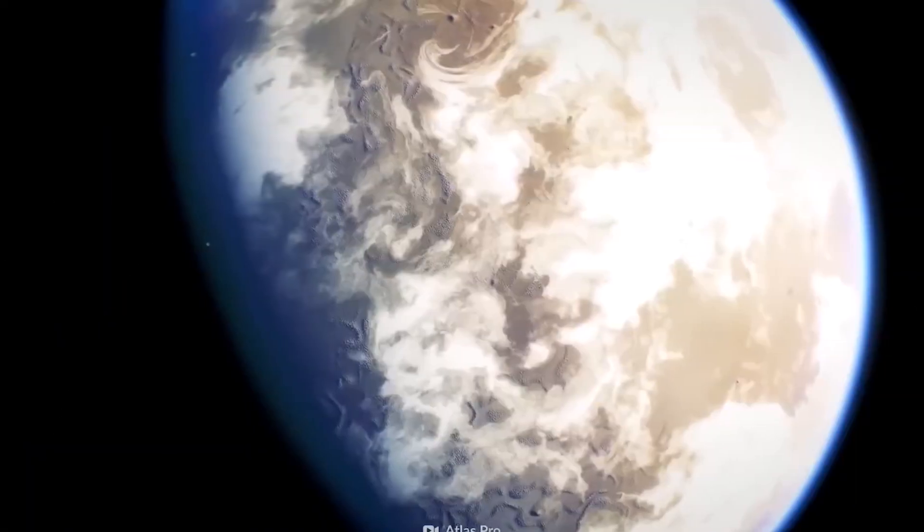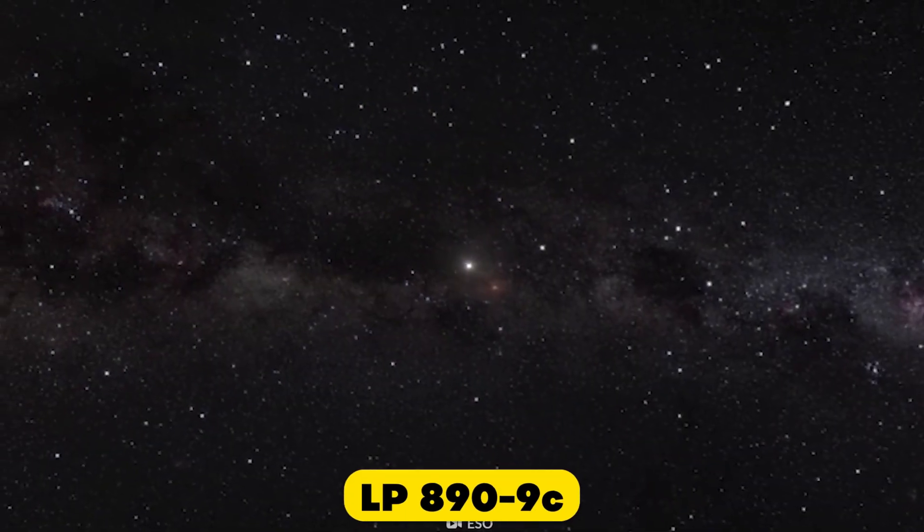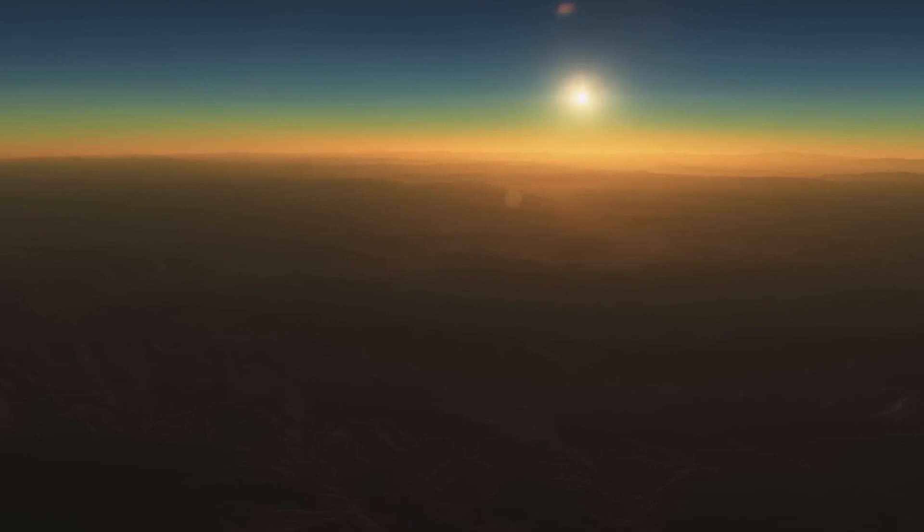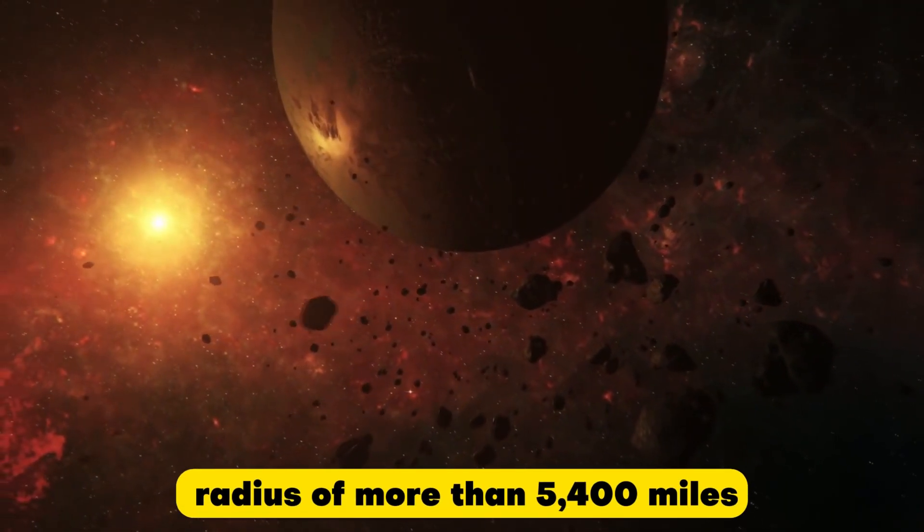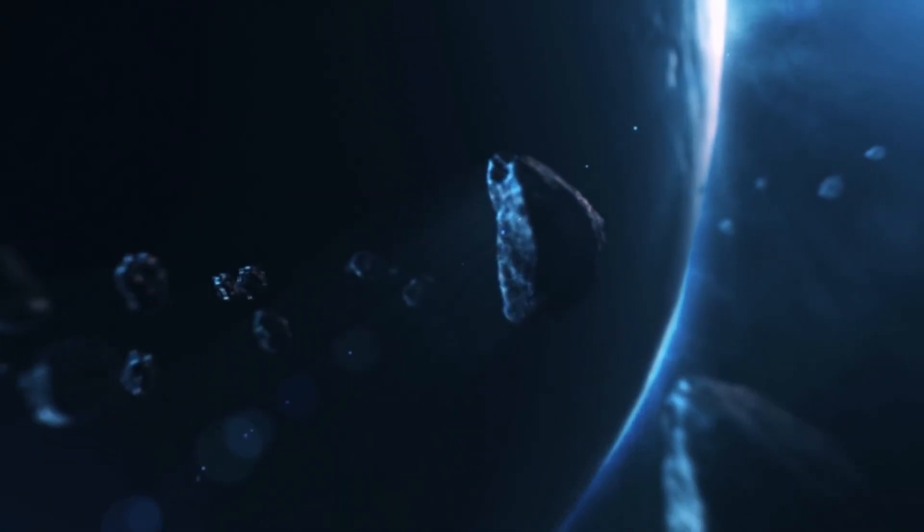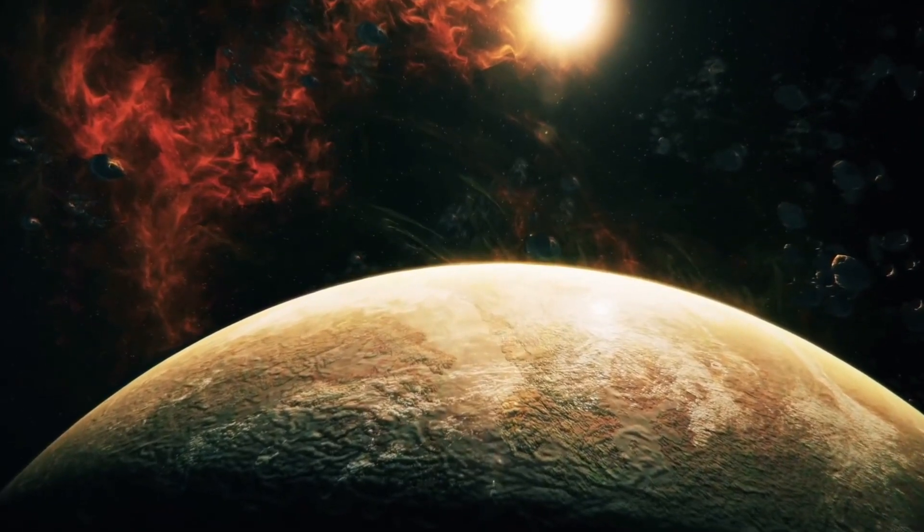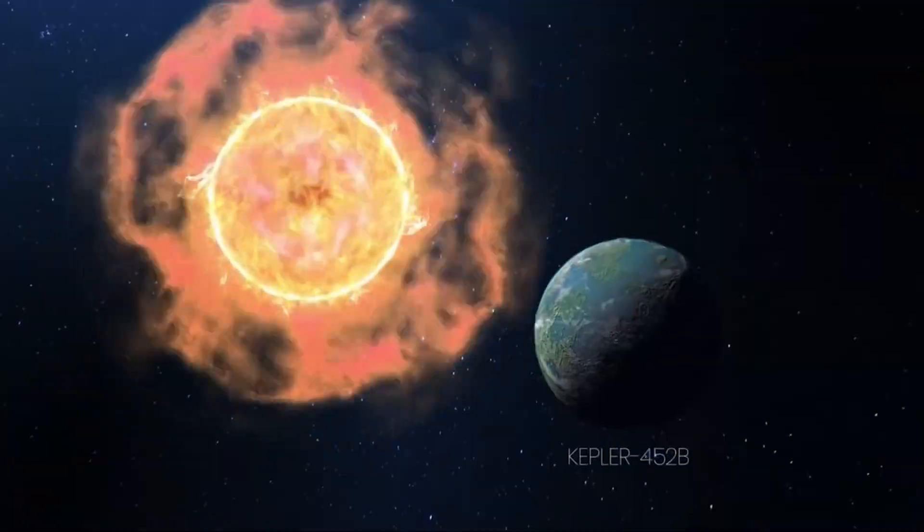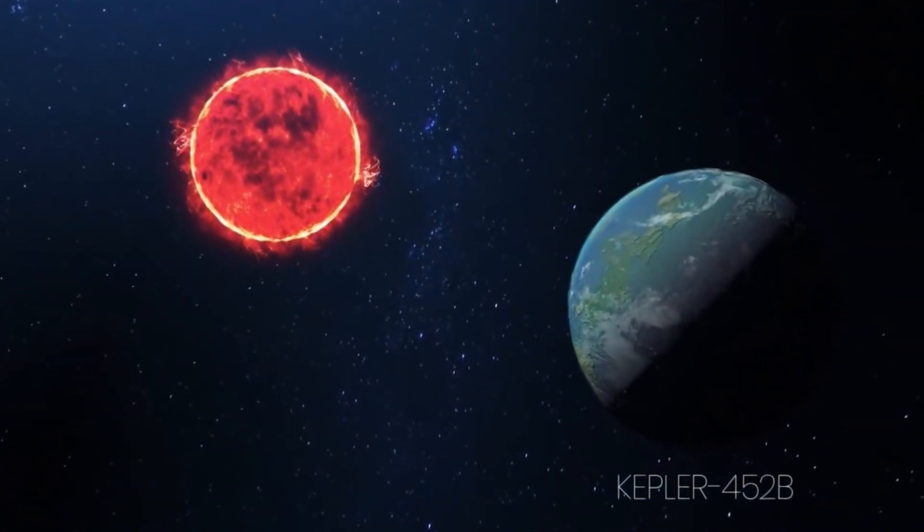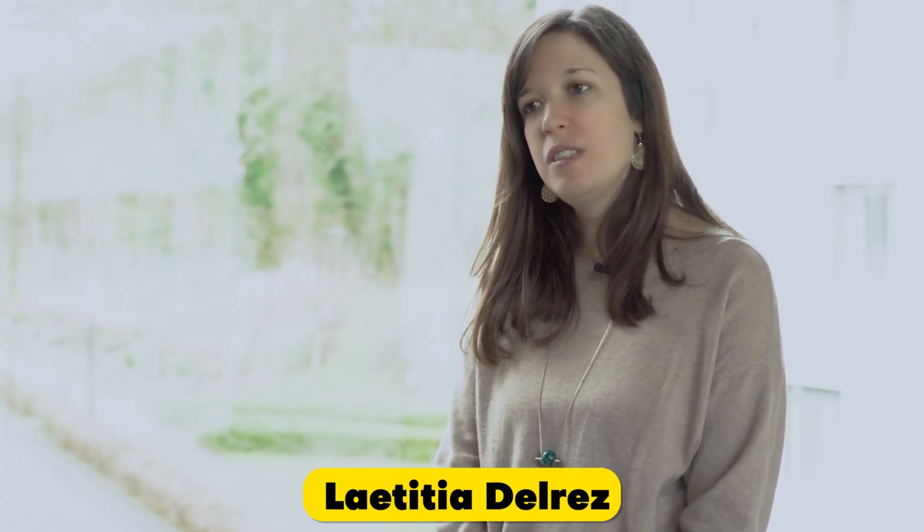But it's a second planet previously unknown to scientists that have proven to be the most intriguing. LP890-9c, or Speculoos 2c, lies slightly farther away from its star than the first planet. It's about 40% bigger than Earth, with a radius of more than 5,400 miles, and takes about three times as long as its neighboring planet to orbit its star. The discovery of LP890-9c, therefore, offers a unique opportunity to better understand and constrain the habitability conditions around the smallest and coolest stars in our solar neighborhood, lead researcher Laetitia Delries said.